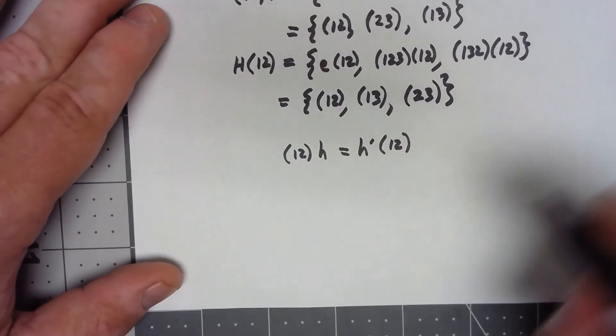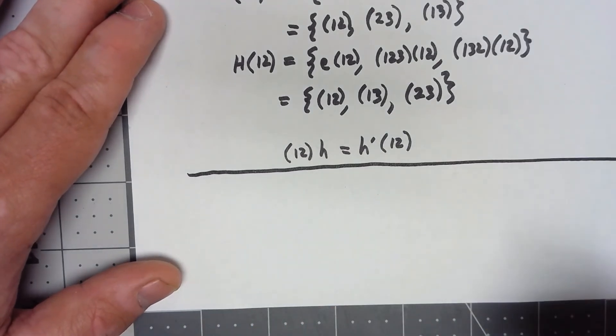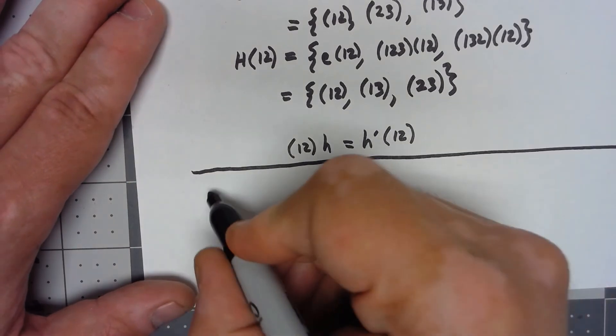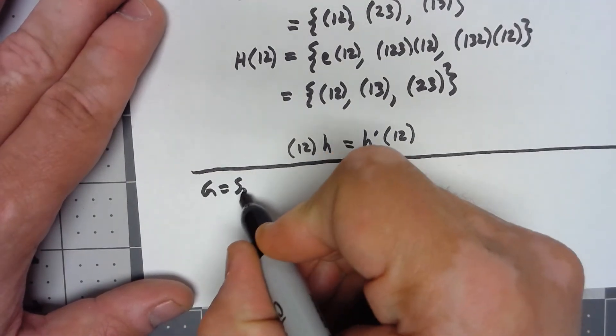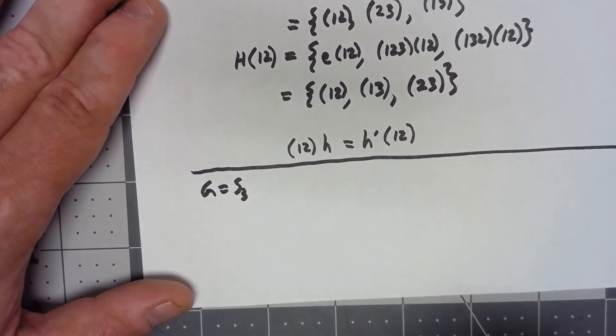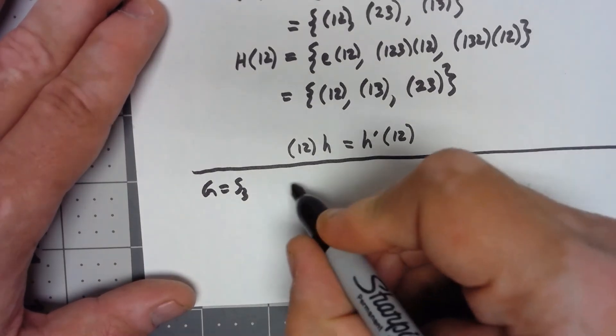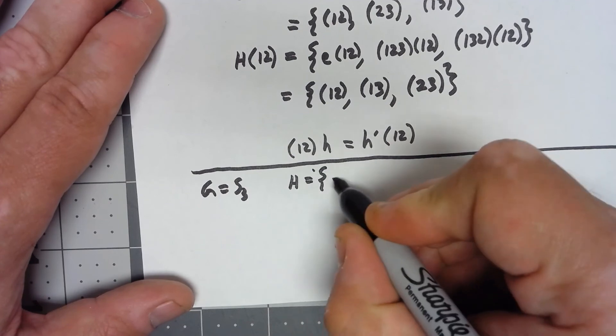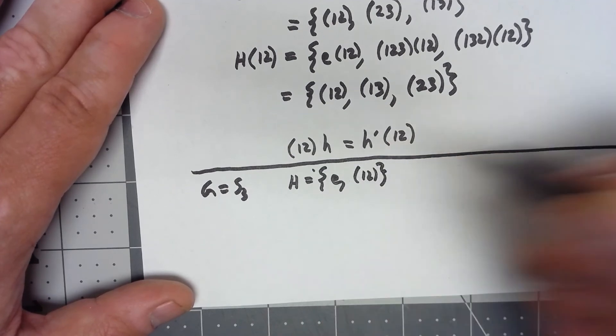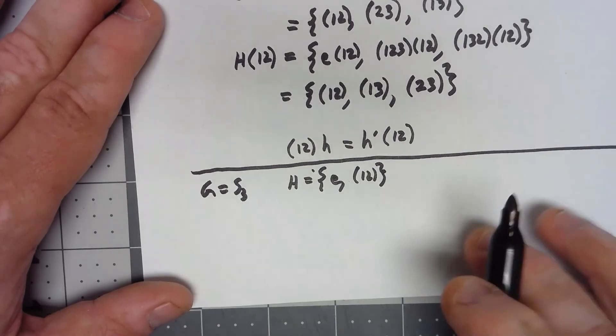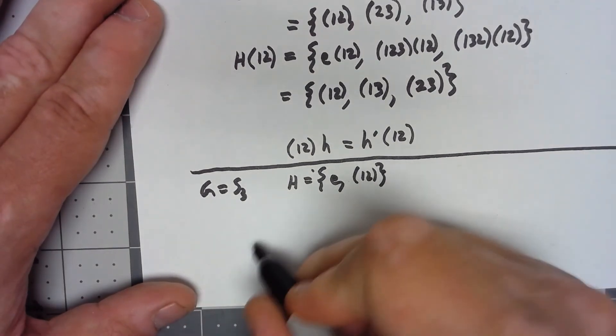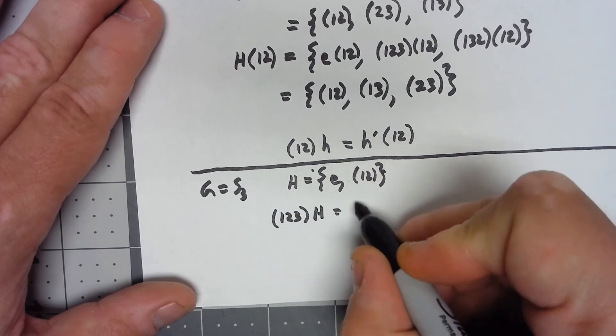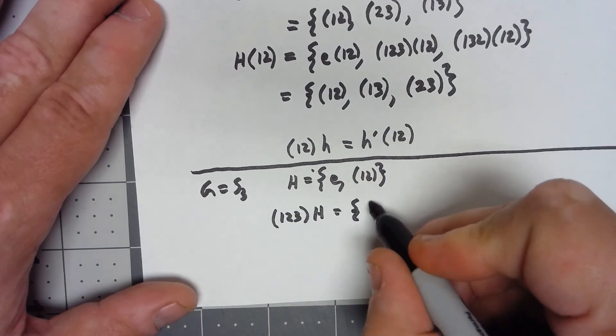Finally, let's take a look at something that's not a normal subgroup. Let's still stick with G equals S3. We need something non-abelian, so that's a good example. Let's say that H is just the set with the identity and (1,2). If I look at (1,2,3)H, I get (1,2,3) and (1,2,3)(1,2).